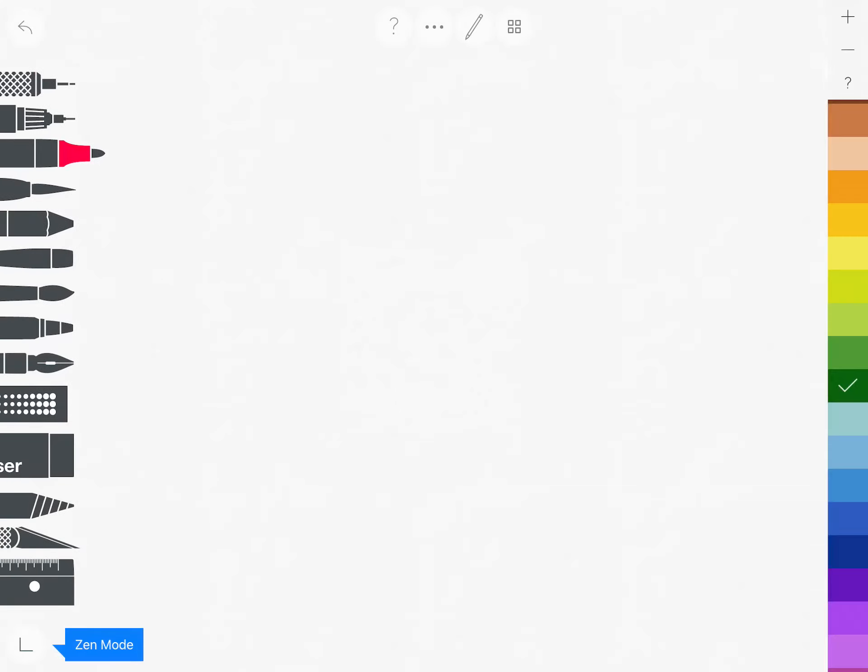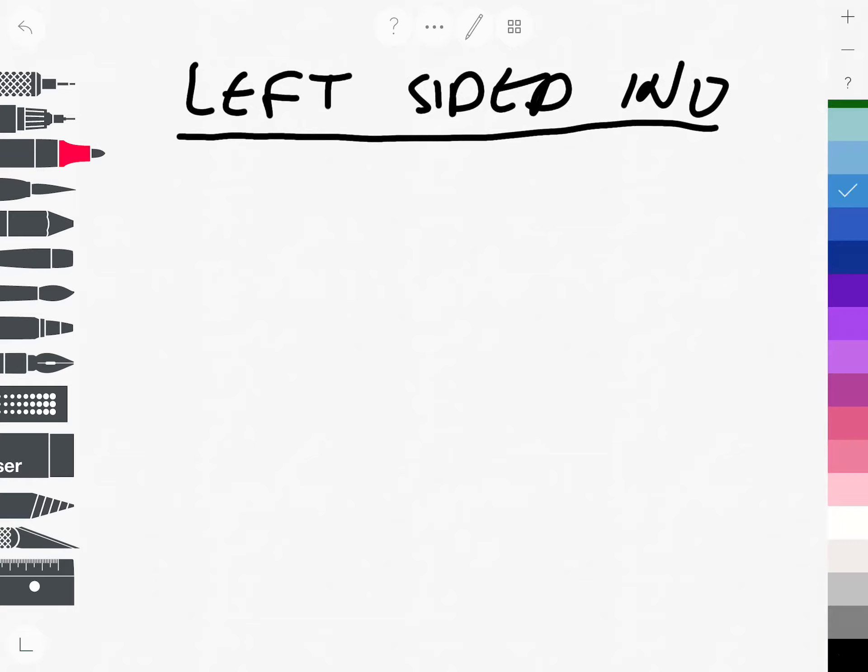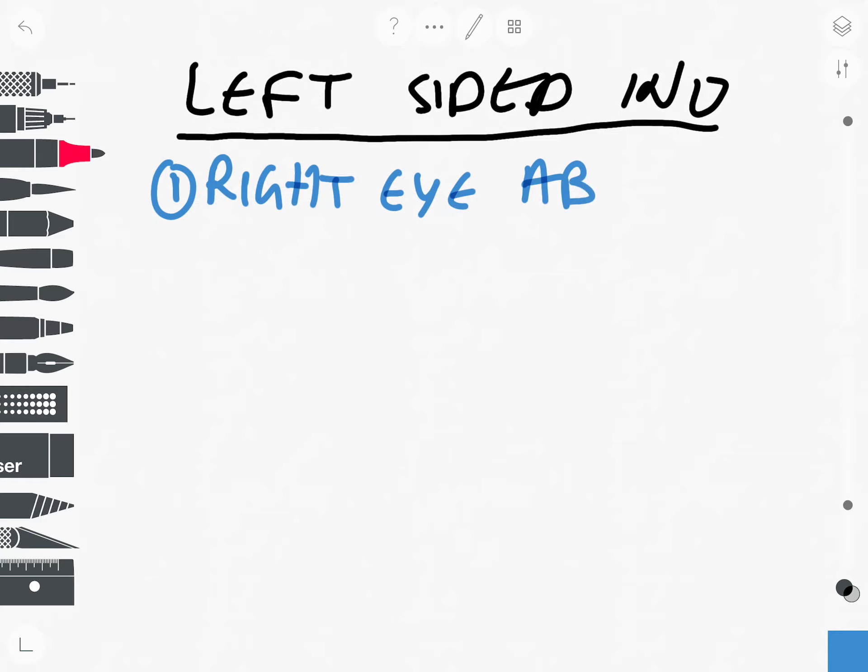So to summarize, if you have a left-sided INO, you get three things. One, right eye abduction with nystagmus. Two, you get failure of left eye adduction.